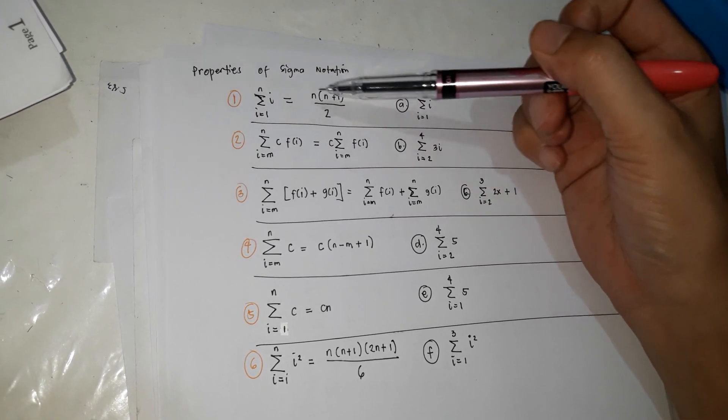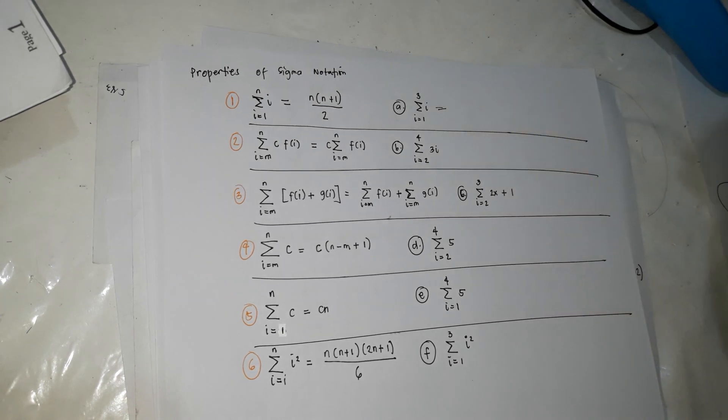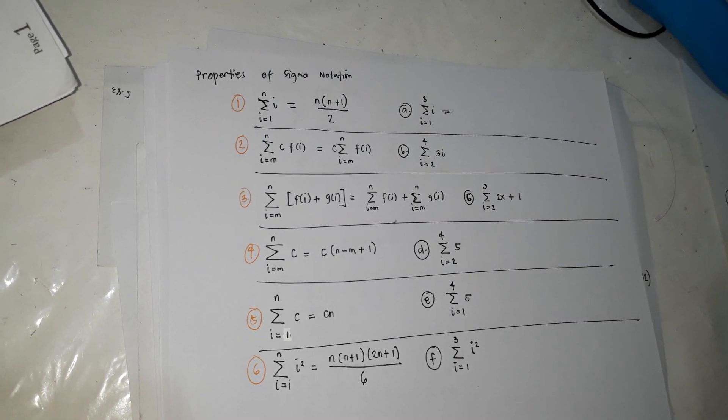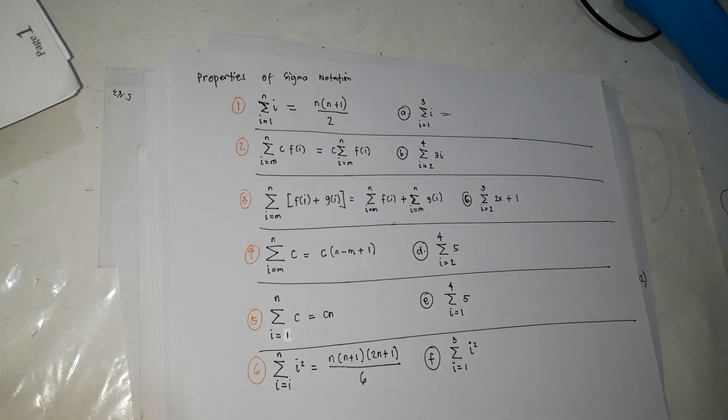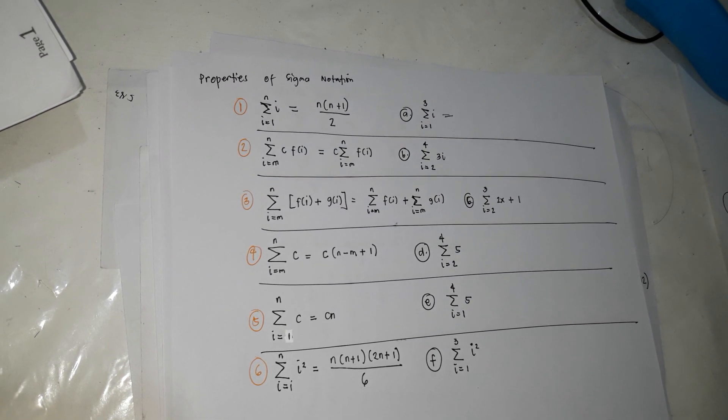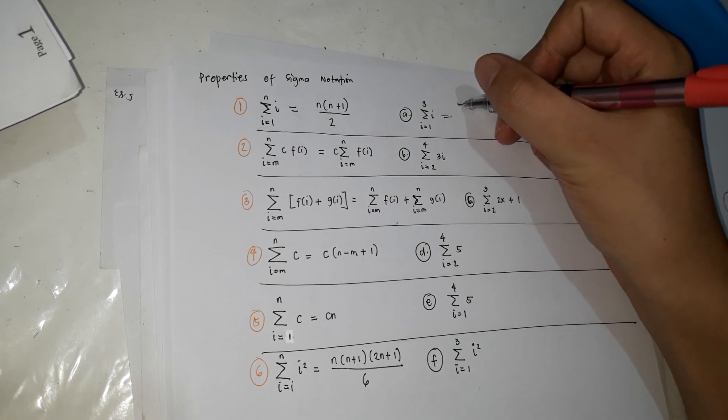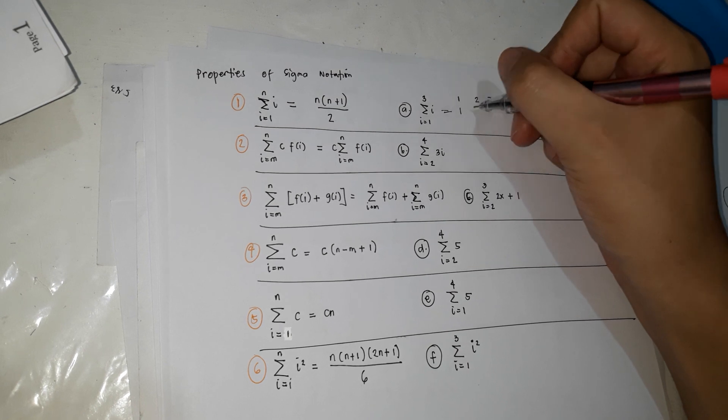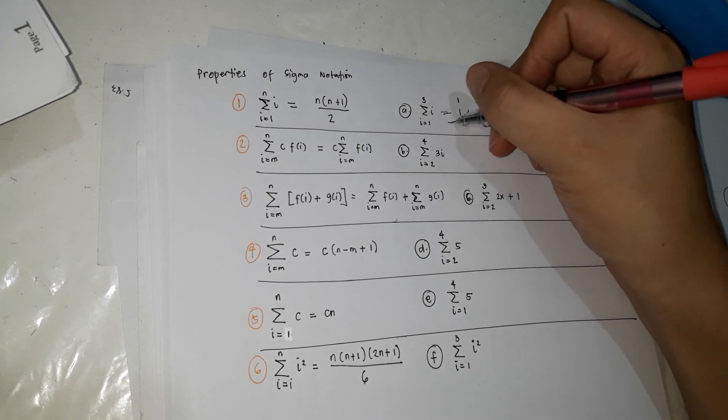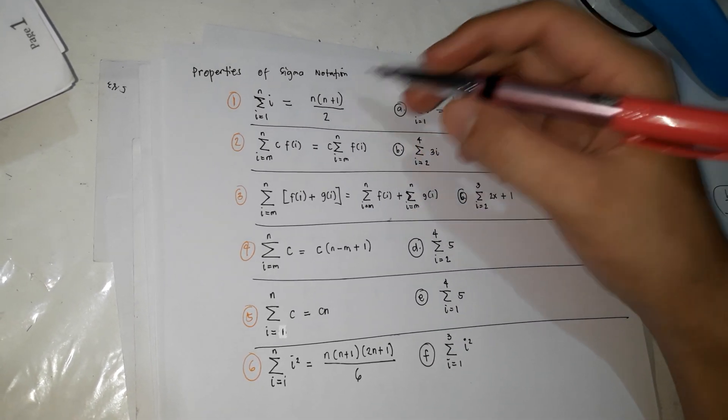the formula for the answer is n times n plus 1 over 2. So kung ganito ang form, from 1 to n, ganito na lang ang formula. So example, for this one, if summation of i from 1 to 3, so ang formula na lang nyan, hindi mo na kailangan na isulat pa yung 1 plus 2, expand pa yung summation, but you can simply use this formula.